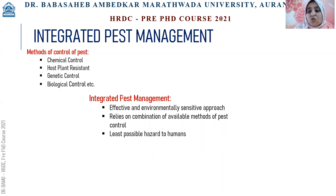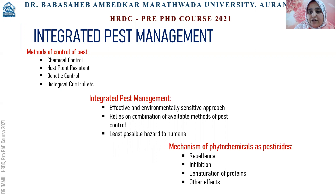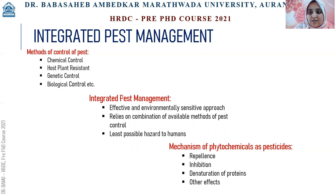To achieve this, one can study the role of phytochemicals as pesticides. The mechanism of phytochemicals as pesticides depends upon the phytochemical as well as the pest, which includes repellence, inhibition, and denaturation of proteins.